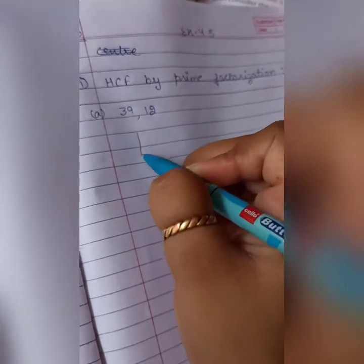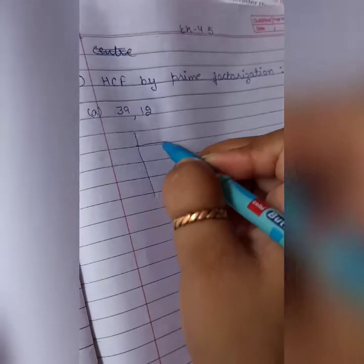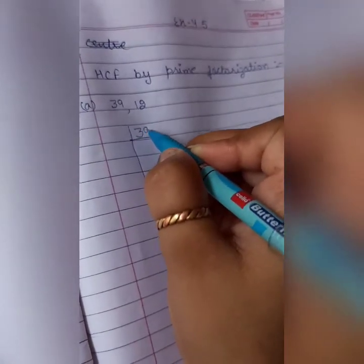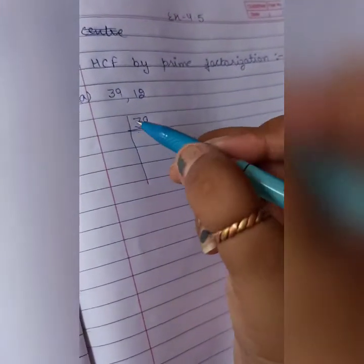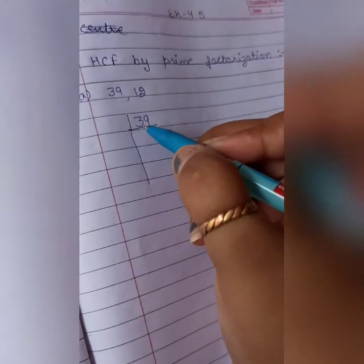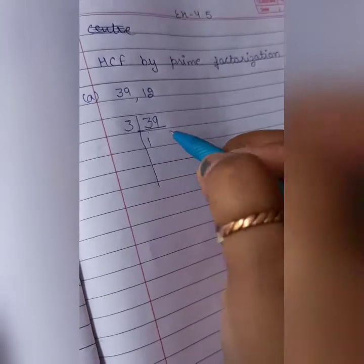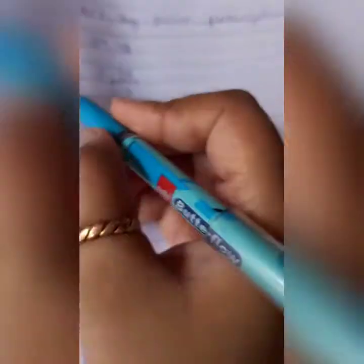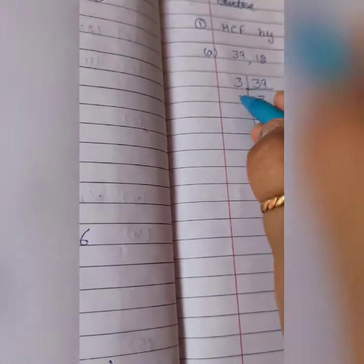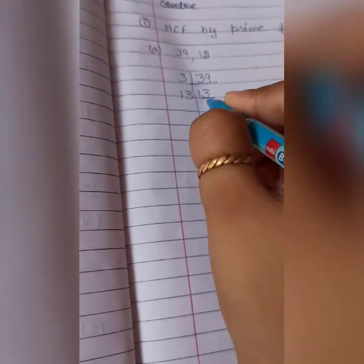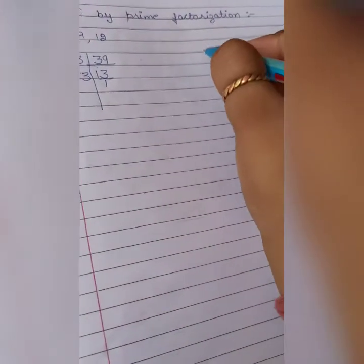First question is 39 and 12. So first we will divide 39. Like this you have to draw one line. Now it can't be divided by 2. So 3. 3 ones are 3, 3 threes are 9. Now what comes? 13. 13 is also a prime number so it is divided by only 13. 13 ones are 13.